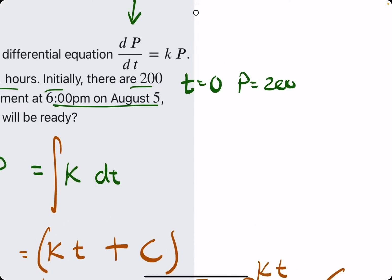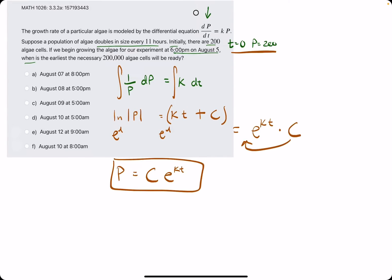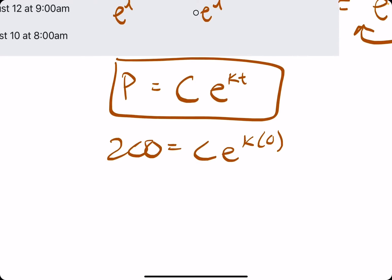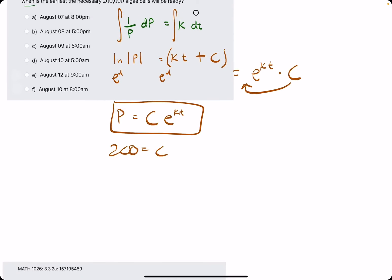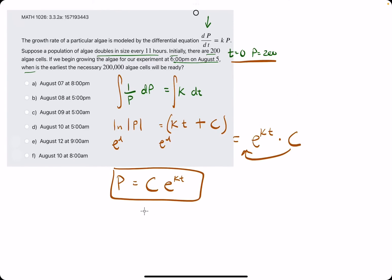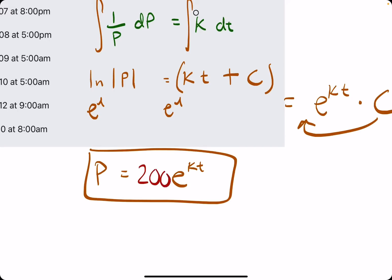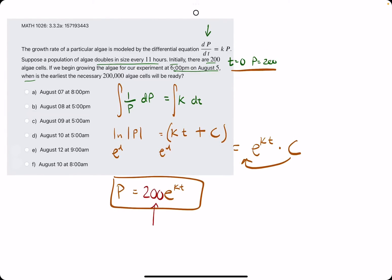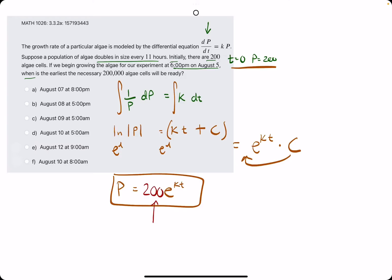So now let's use the initial condition. So if we plug in zero for T and 200 for P, what do we get? So zero for T gives us K times zero, which is zero. E to the zero, which is one. C times one is just C. So C equals 200. Another nice thing about this is that the initial value they give you is always the C value out in front. It always works out that the coefficient of the E term in these types of exponential growth or decay problems is your initial value. This constant is your initial value always.